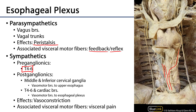Some may descend down toward the cardiac plexus and beyond, as there is significant communication between cardiac, pulmonary, and esophageal plexuses. There will also be direct branches from T4 to T6 ganglia out to the esophageal plexus, as well as communications of cardiac branches from superficial and deep cardiac plexuses.